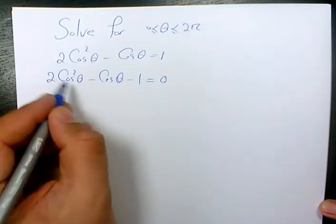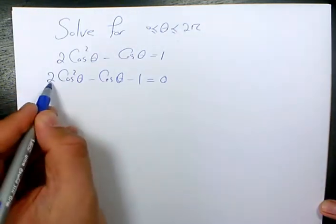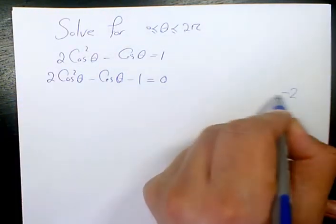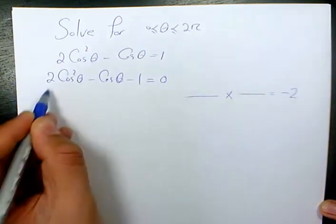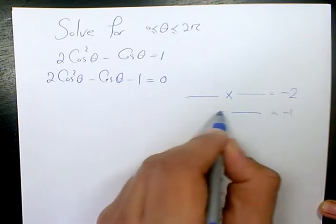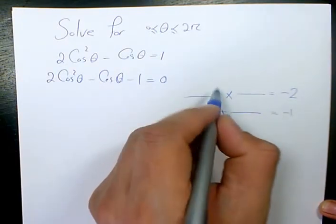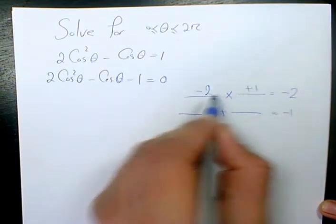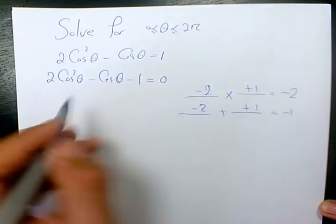Then I need to factor it. It's going to be 2 times negative 1. I'm going to use AC method. 2 times negative 1 is negative 2. And here I have negative 1. So, we have negative 2 and positive 1. When you multiply it, it's negative 2. When you add it, it's negative 1.